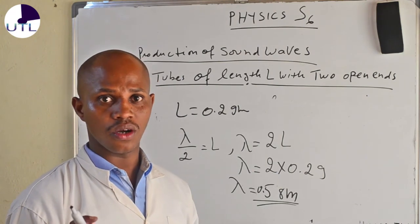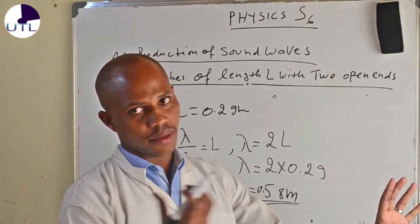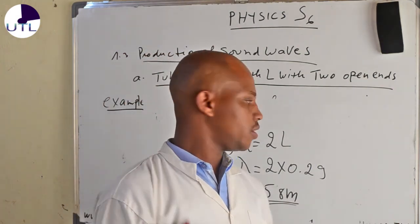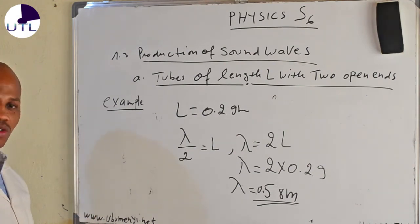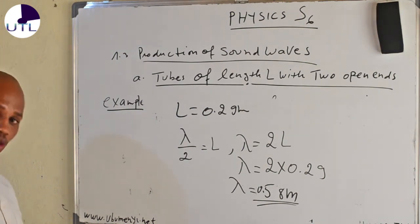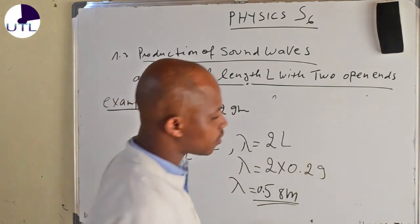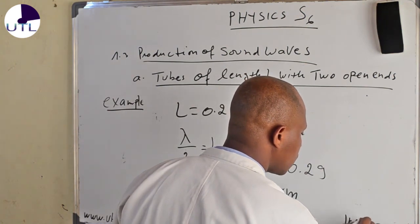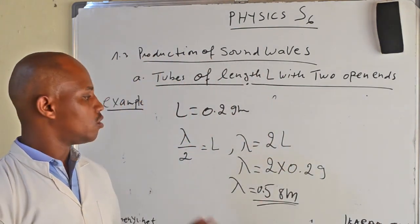Now let us go to another case where we have one open end and another part that is closed when producing sound waves. That is the second case. Please subscribe to our website to access the content on sound waves, because now we are going to do tubes of length L but closed at one end. You can find that content at www.umeni.net. You can also subscribe on YouTube channel Ikaramu TV — subscribe and like it. Thank you very much.